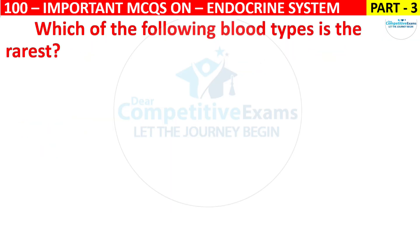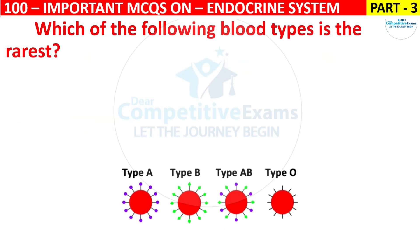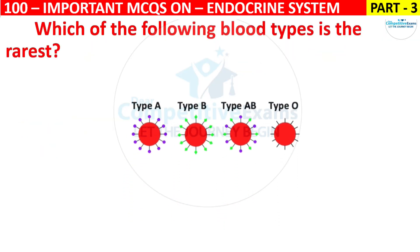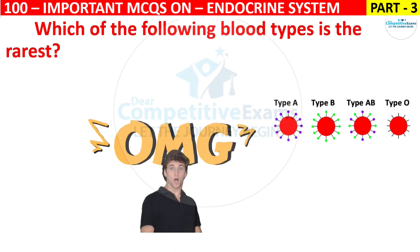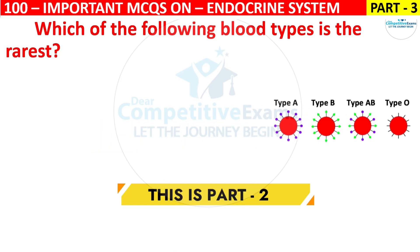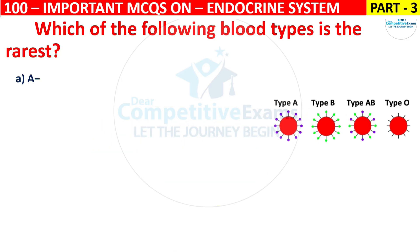Which of the following blood types is the rarest? Your options are A negative, B negative, AB negative, or O negative.